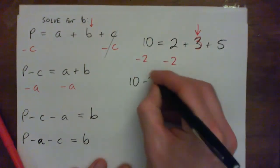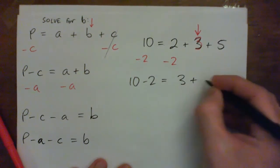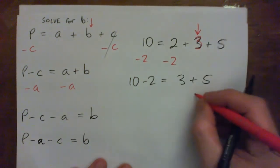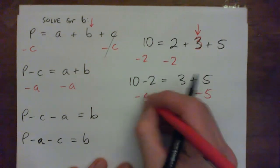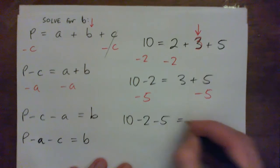And you get 10 minus 2 equals 3 plus 5. And then you could subtract 5 from both sides. And you get 10 minus 2 minus 5 is equal to 3.